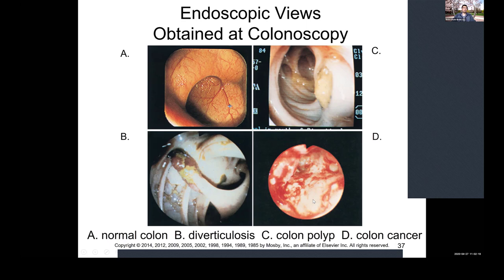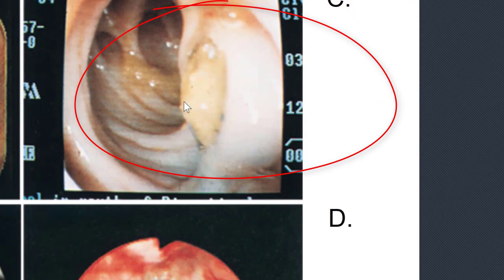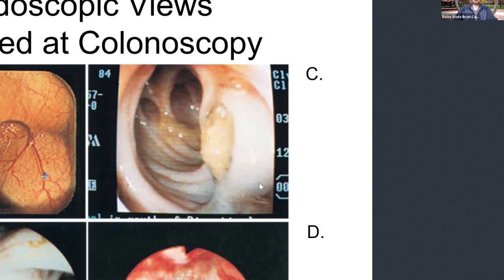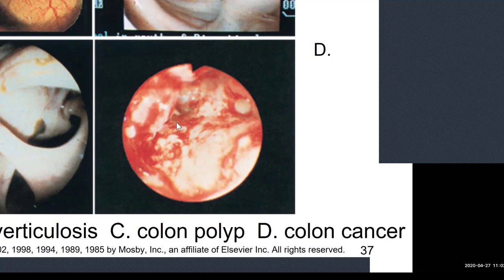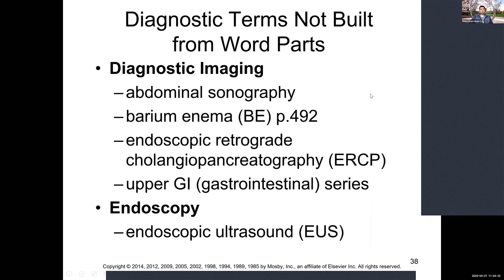Here are actual colonoscopy images: A shows a normal colon; B shows diverticulosis with food stuck in a diverticulum; C shows a polyp needing excision; D shows colon cancer — notice how red and angry the surrounding tissue is with colitis present. A normal healthy colon should be a nice orangish-pinkish color, not the angry, inflamed appearance seen around cancerous tumors.